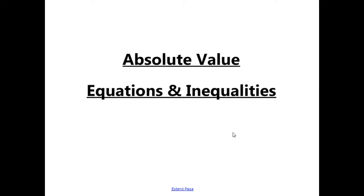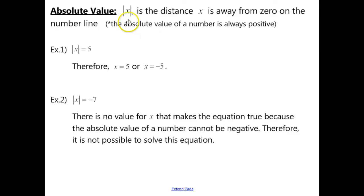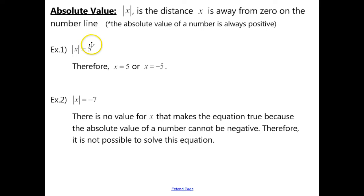Equations and Inequalities. The absolute value of x is the distance x is away from zero on the number line. The absolute value of a number is always positive, because we're talking about distance — the number always has to be positive. We never talk about distance or length in terms of negative numbers. You would never say you live negative 4 miles from school, or that you're negative 5 feet 6 inches tall. We always talk about distance and length in terms of positives.